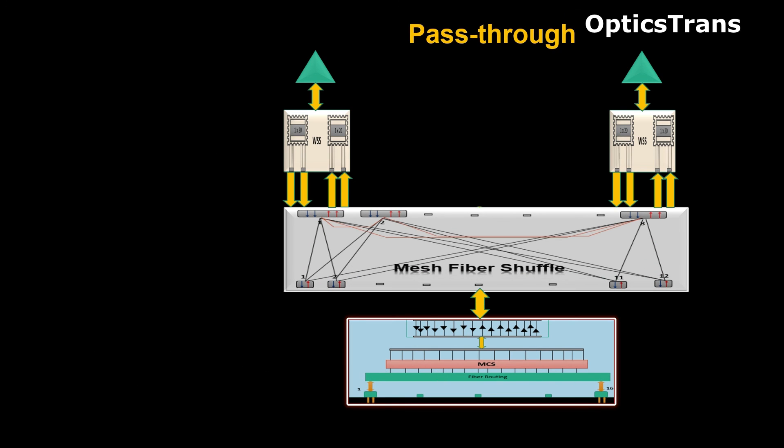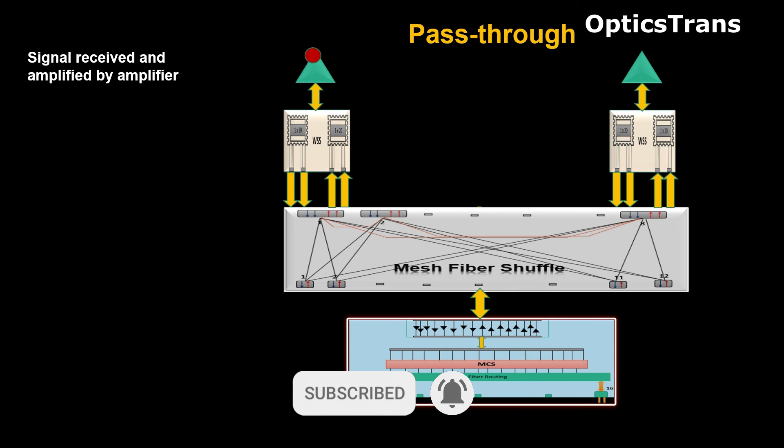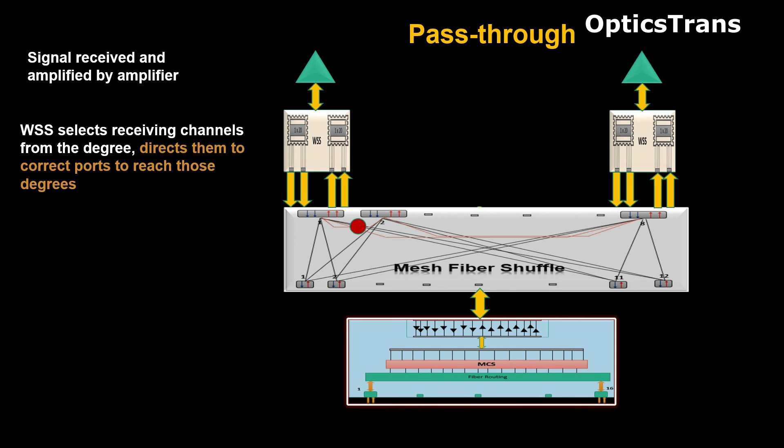In the mesh configuration, to pass through the signal between degrees, signal is received at amplifier, and then WSS selects channels and sends to fiber shuffle. Fiber shuffle using internal connectivity directs them to the correct ports to reach those degrees, and from WSS of that degree, signal is transmitted.